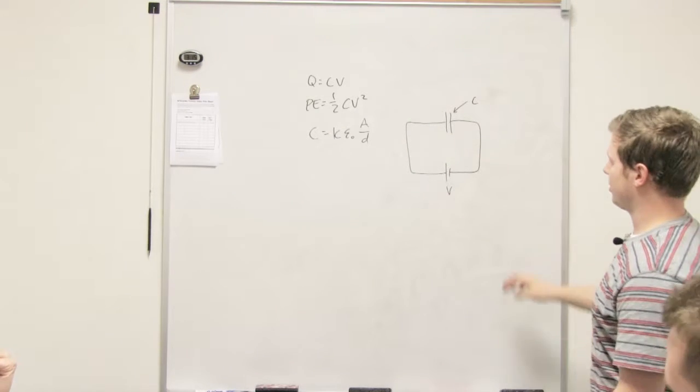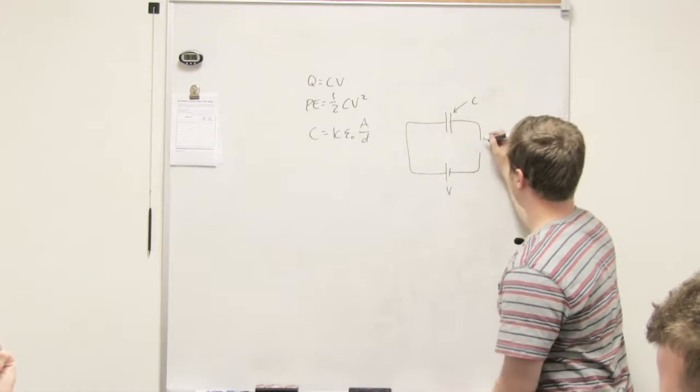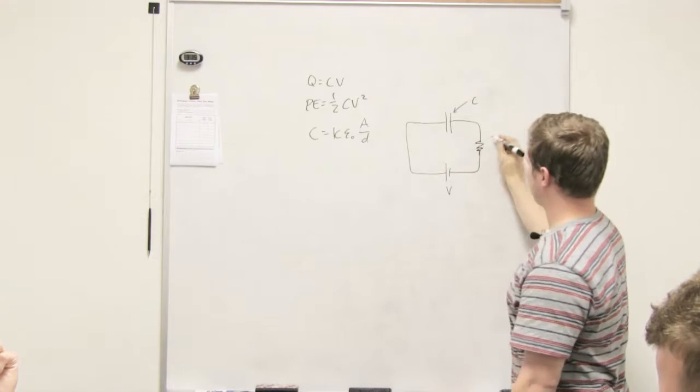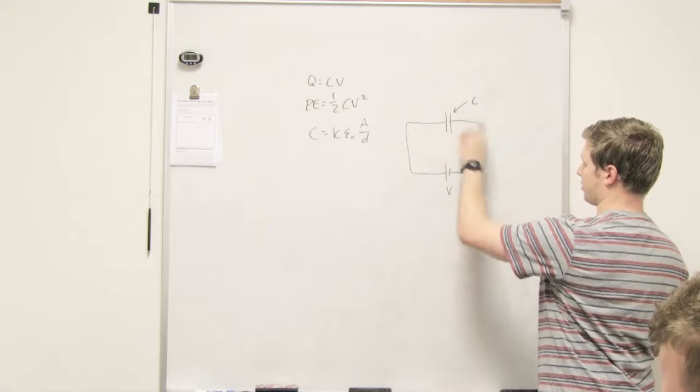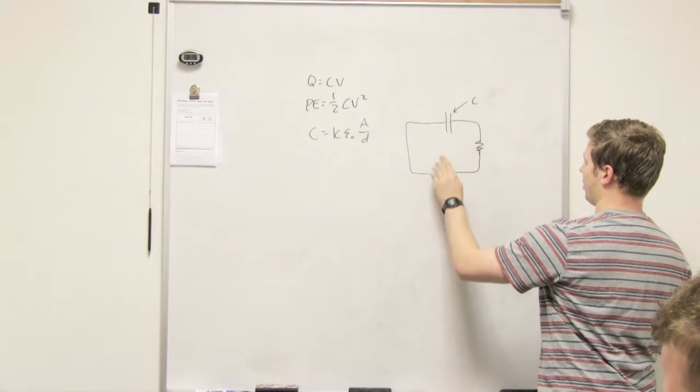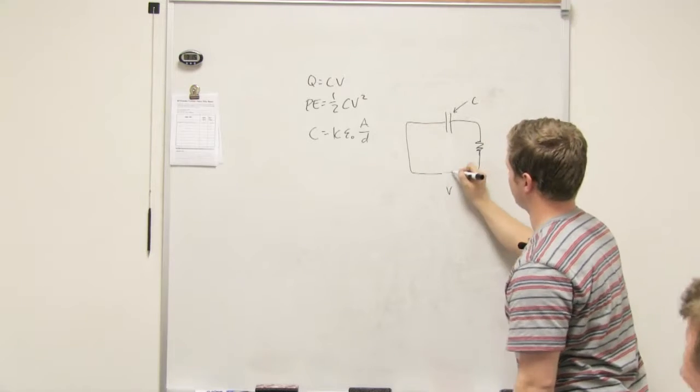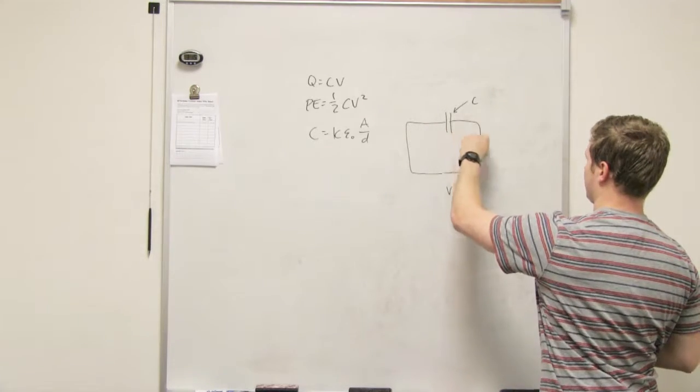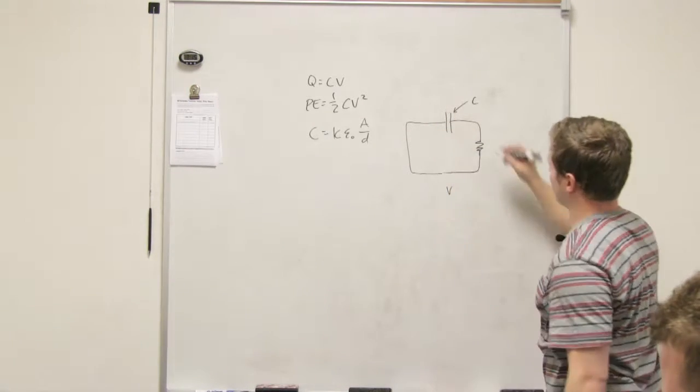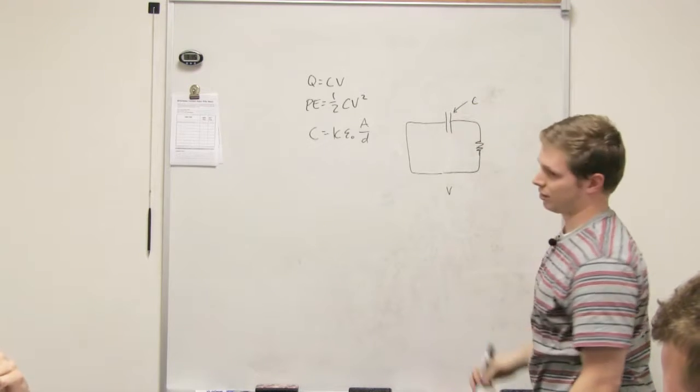So for instance, let's say that you have a light bulb here. So this light bulb is shining, right, this thing is giving it power. Well if you take away the voltage source, you have to keep the circuit closed, but if you keep it closed this thing has charge on it and it can keep this thing going for a little while.